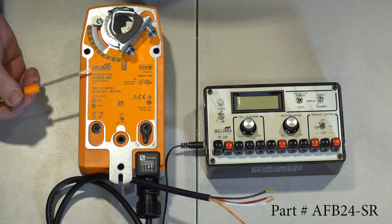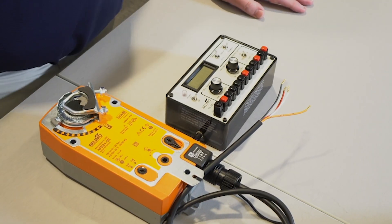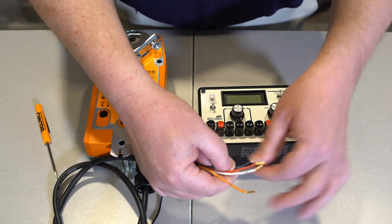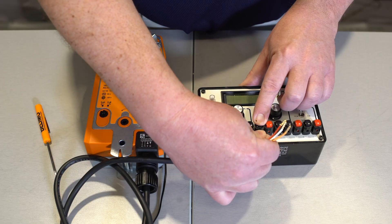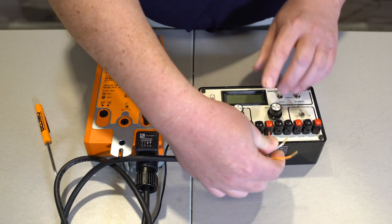The standard wiring for this actuator will be the same as what I showed you with the LMB24-SR, where the black wire is going to be connected to transformer common. The red wire will be connected to transformer hot, or 24 volts.